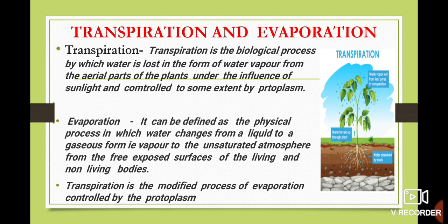So this definition of transpiration tells you it belongs to a biological process, what is getting lost from the plant body, from which portion — the aerial portion — and that it is controlled by agents like sunlight and to some extent by protoplasm. Now you also need to know what evaporation is, because there is a link between these two processes.